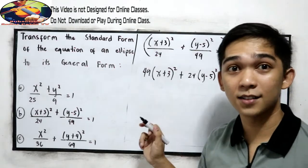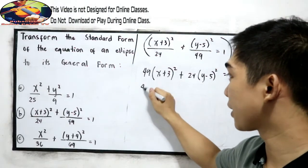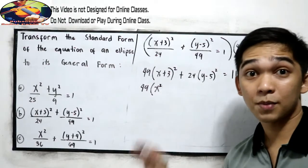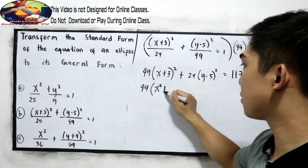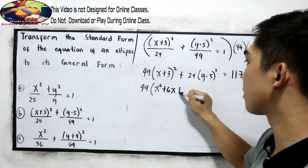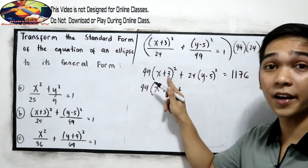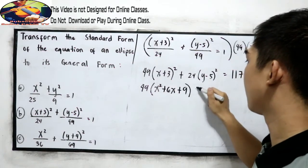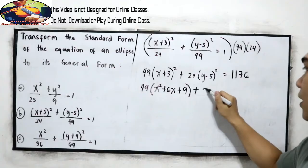So we have 49, square the first term, that is x squared, multiply the first and the second times 2. So that is 6x plus square the second term, 3 squared, that is 9.